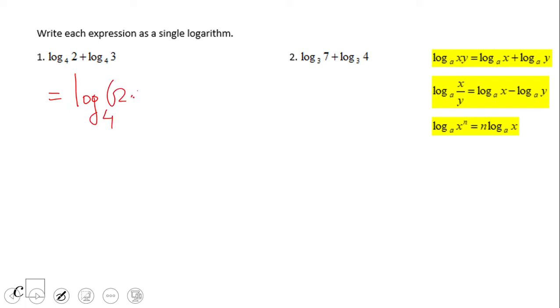So here we're gonna have log in base 4 of 2 times 3. We're gonna use these rules. Rather, go, that'll be in base 4 of 6. That is the final answer.